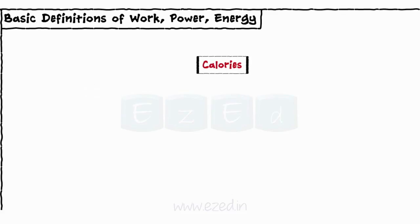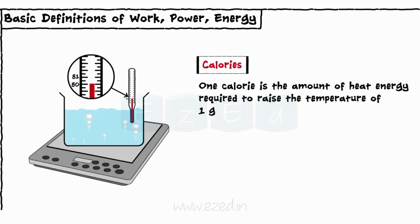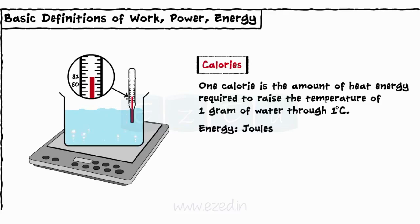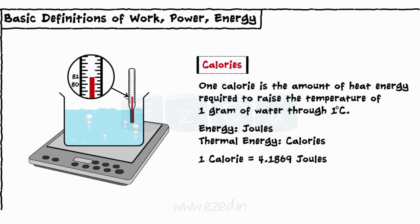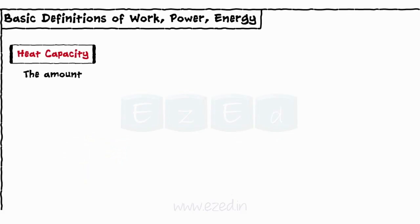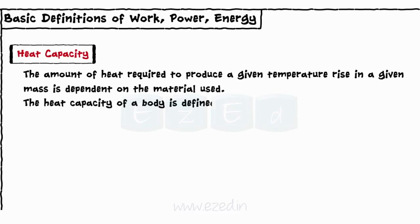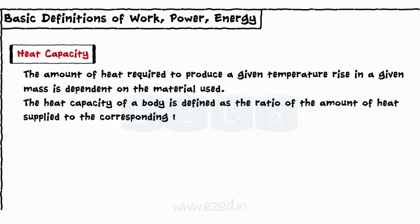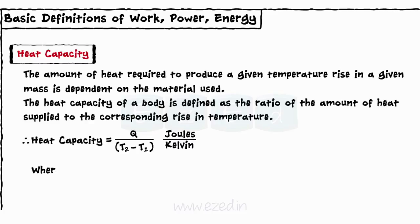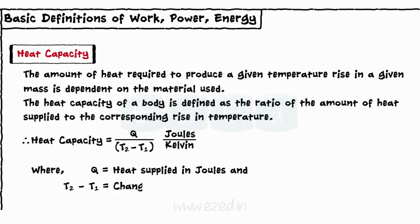One calorie is the amount of heat energy required to raise the temperature of one gram of water through one degree Celsius. The energy is measured in joules and thermal energy is measured in calories. The relationship between joule and calorie is: 1 calorie equals 4.1869 joules. Also, 1 kWh equals 3.6 into 10 raised to 6 joules, which equals 860 kilocalories. Heat capacity: the heat capacity of a body is defined as the ratio of the amount of heat supplied to the corresponding rise in temperature. Heat capacity equals Q upon (T2 minus T1), where Q equals heat supplied in joules and T2 minus T1 equals change in temperature.